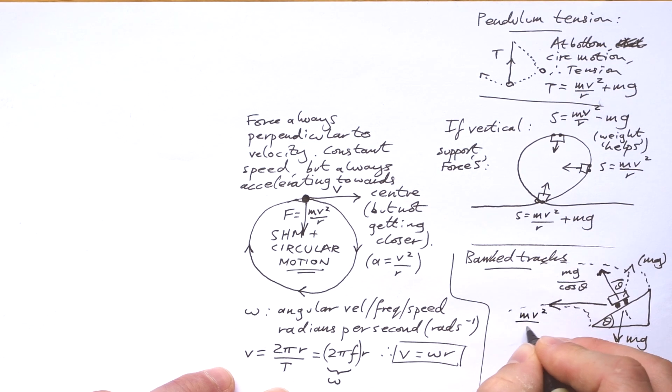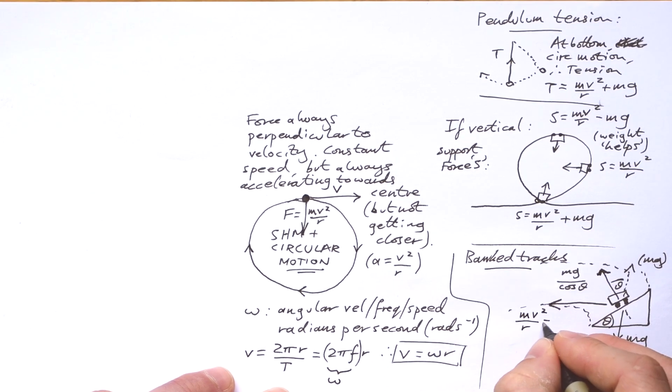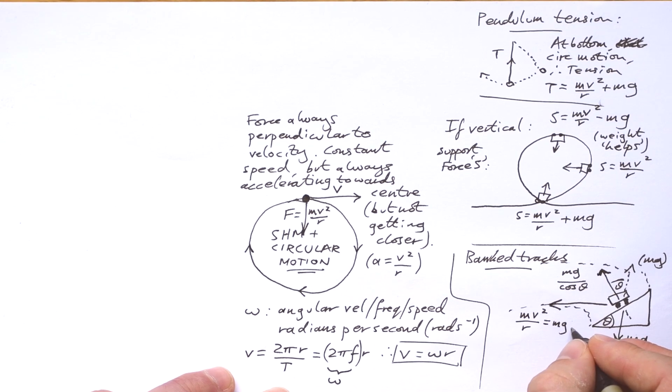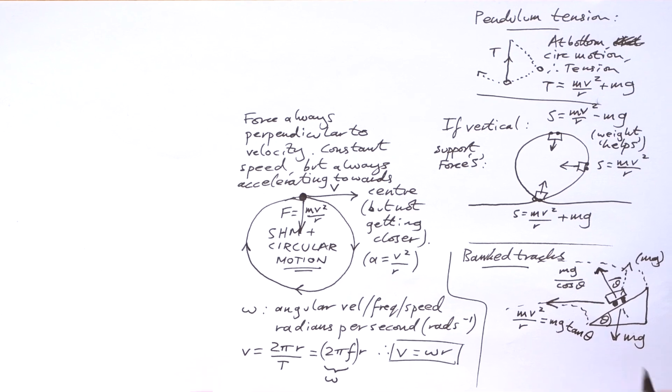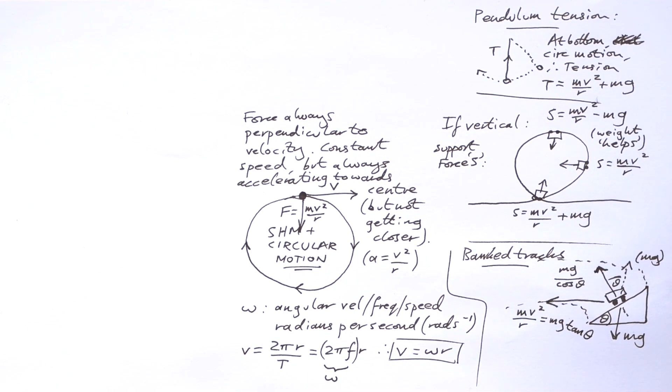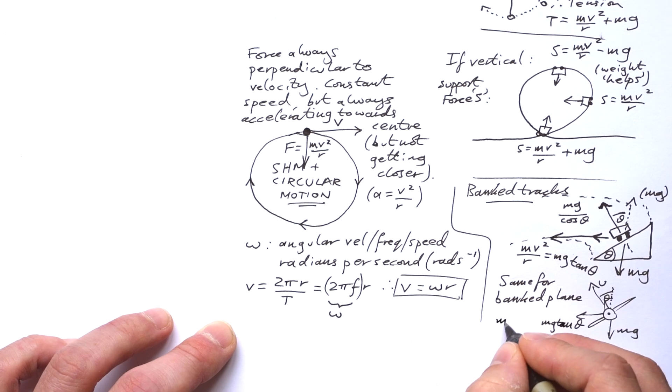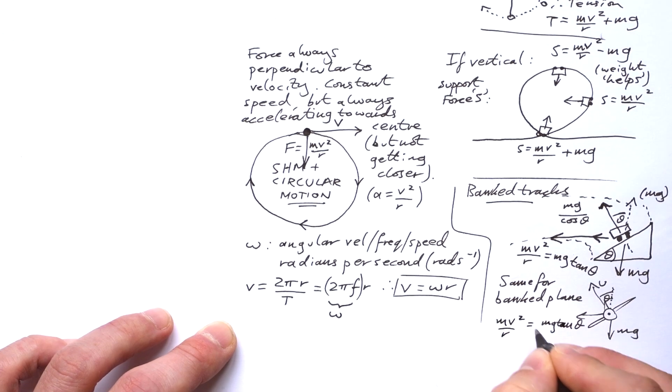So we know that the centripetal force is going to be mv squared over r, yes, but just using the weight, if we take mg cos theta, then times by sine theta, then that means that the centripetal force is also equal to mg tan theta. If you're going to prove that to yourself, then make a triangle on the left with mg on the left, and it should all become clear. And that's going to be the same for a plane that's banking as well, or rolling. The biggest force here is the upthrust supplied by the wings. And similarly, the centripetal force is going to be equal to mg tan theta again.